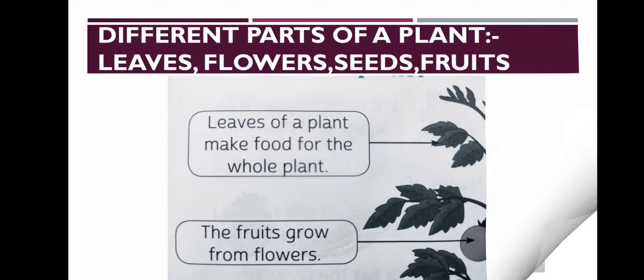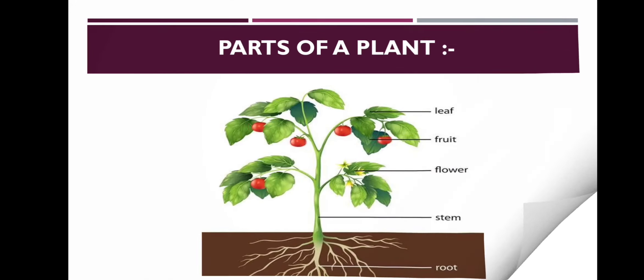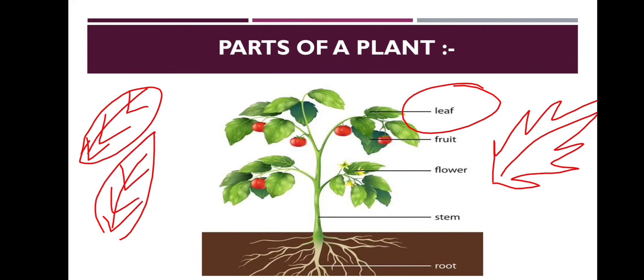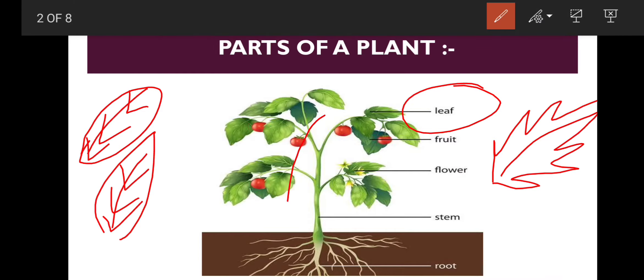Next part is stem. So what is stem exactly? You all can see this part. This part is called stem. This is the base and the main part of the plant. The main part of the plant has all the fruits, flowers and leaves attached to it.